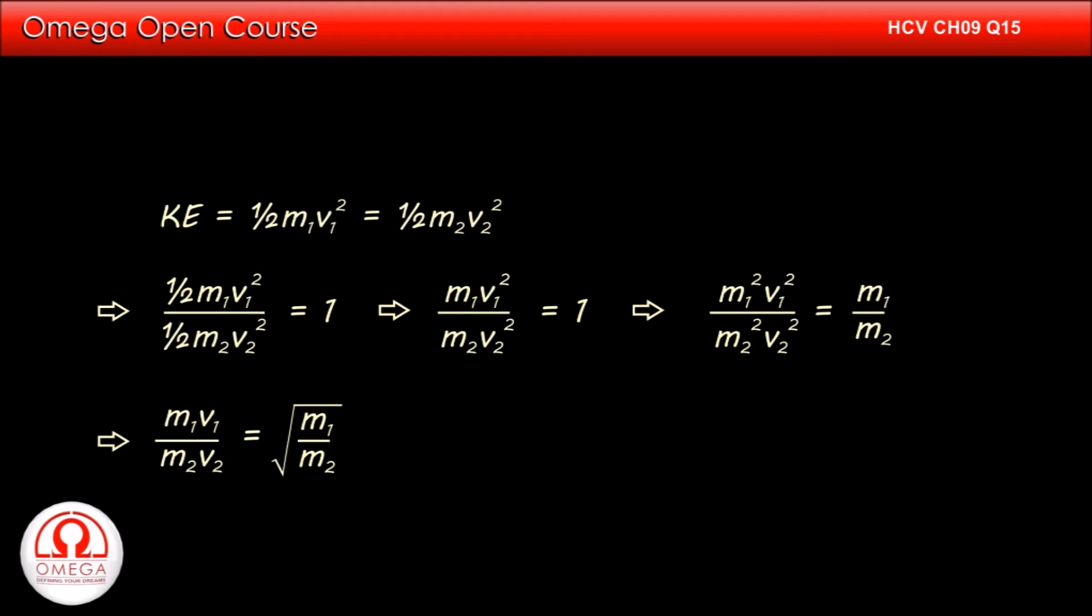Taking the square root on both sides, we get m1v1 by m2v2 is equal to root m1 by m2.